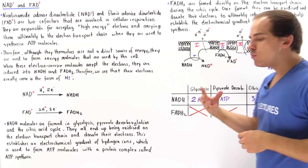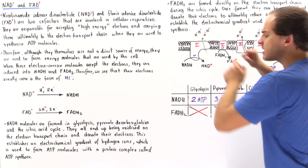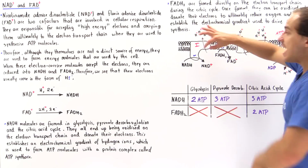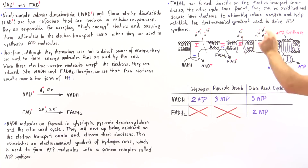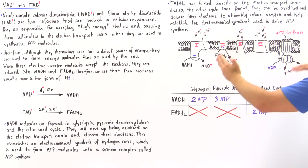When NADH is synthesized, it goes to protein complex number 1, also known as NADH dehydrogenase. This complex accepts the electrons from NADH and oxidizes it back into NAD+. Those two electrons are then carried from complex 1 to complex 3 and to complex 4. As the electrons move, H+ ions are pumped from the mitochondrial matrix into the intermembrane space, establishing an electrochemical gradient.